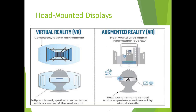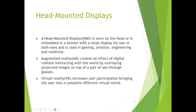Head-mounted displays (HMDs) are where virtual reality and augmented reality come in. Virtual reality puts on a headset and gives a completely digital environment. Augmented reality lets you still see the real world, but with digital information overlaid — like Apple's recent product where you see the real world plus digital content displayed over it. HMDs are worn on the head or embedded in a helmet, with a display for one or both eyes, used in gaming and aviation.